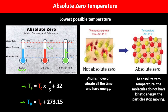At absolute zero temperature, the molecules inside don't have any kinetic energy because they are not moving — they stop moving because they don't have energy. If the temperature is even slightly higher than zero Kelvin, the atoms will start to move and vibrate, gaining kinetic energy. You should know the absolute zero temperature on the Kelvin, Celsius, and Fahrenheit scales, and remember the two conversion equations to switch between them easily.